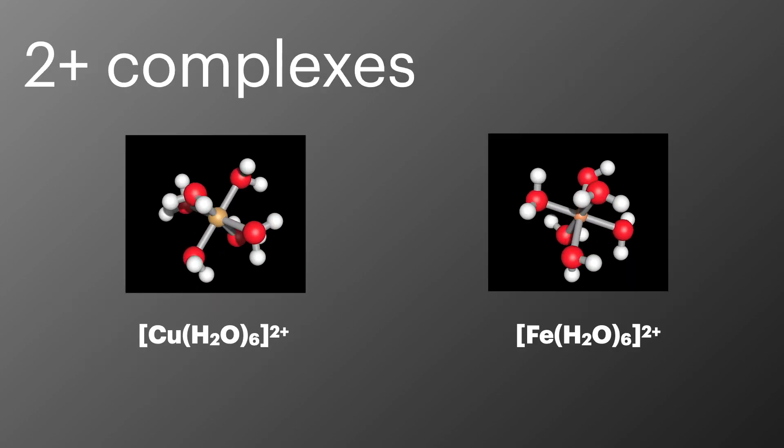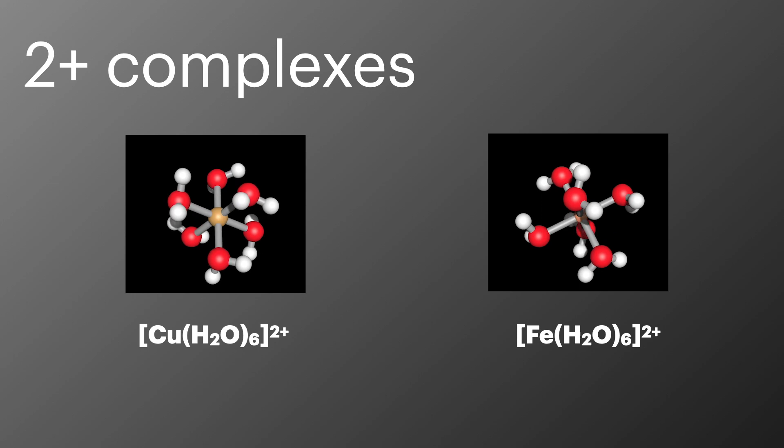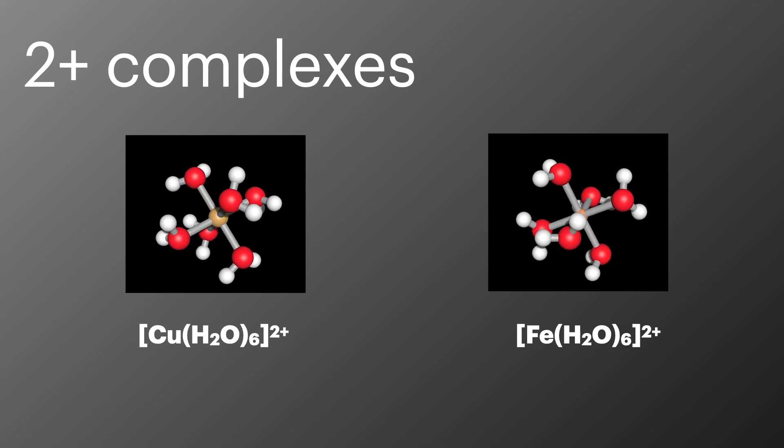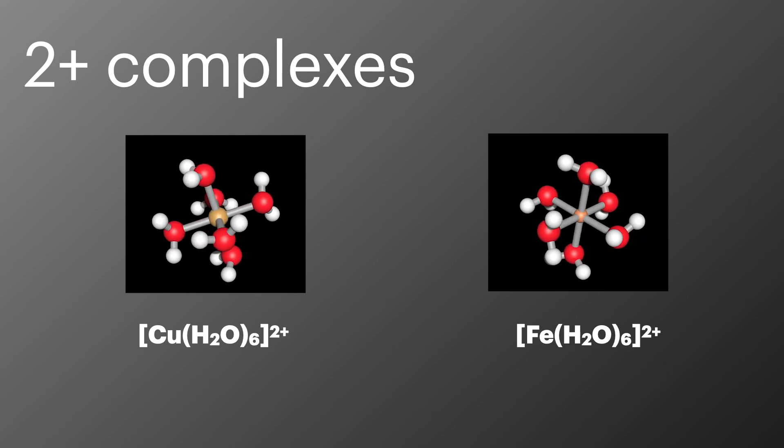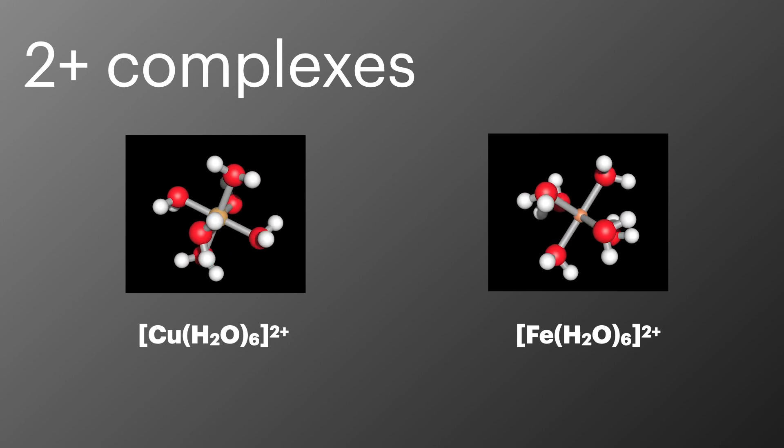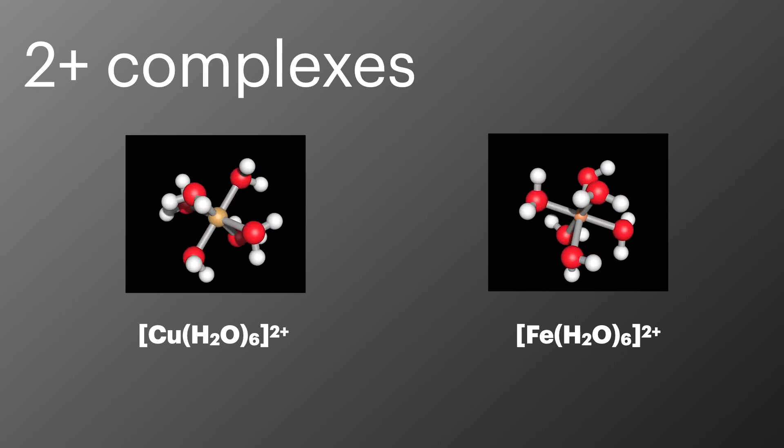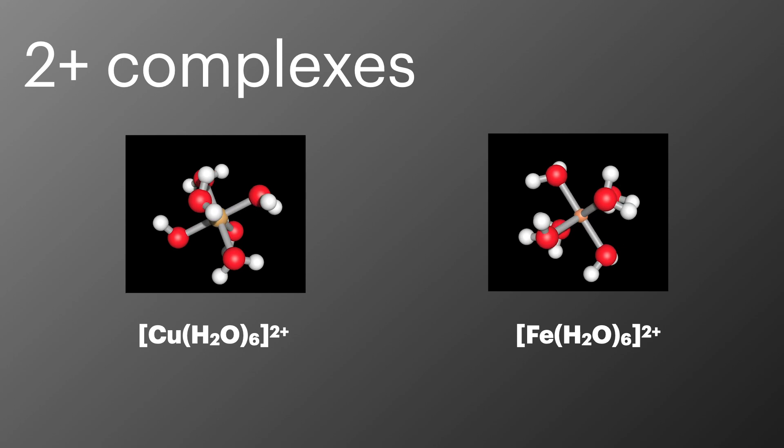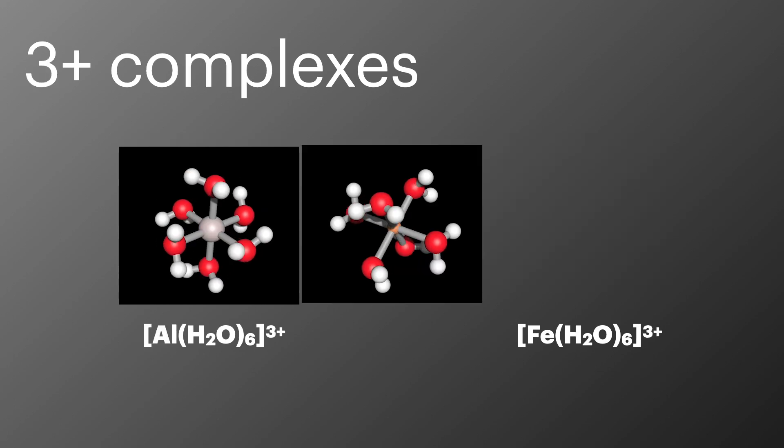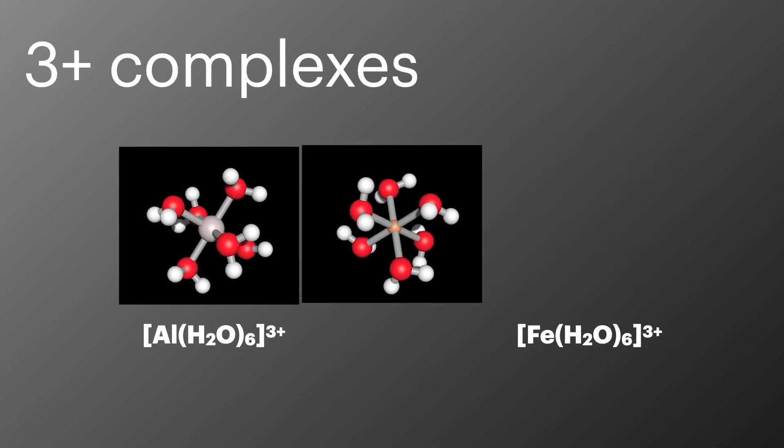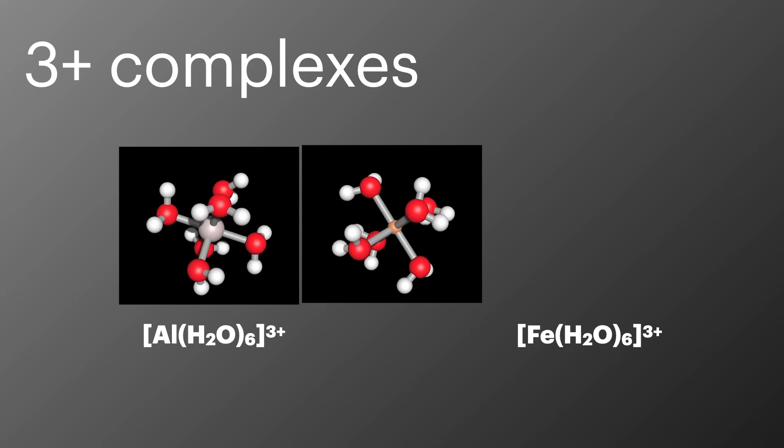We only need to know about four different metal aqua complexes and we can split these by the charge on the metal ion. As water ligands have no charge, this is the same as the overall charge on the complex. The 2+ metal ion complexes that we need to know about are copper 2+ and iron 2+. For the 3+ metal ion complexes we're going to look at aluminium 3+ and iron 3+.